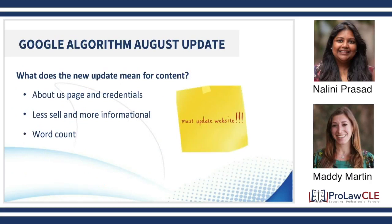In terms of the Google algorithm update from August: for content, you want to make sure your credentials are very clear on your website. Your About Us page should feature where you graduated from, your Super Lawyer awards, any local awards — whatever it may be. Make sure you're selling less, with less keyword spamming and more information that people can actually use whether or not they're looking for a lawyer. Keep your word count at an optimal level — don't stuff pages just to post information. It needs to be meaningful.